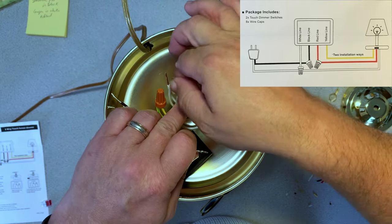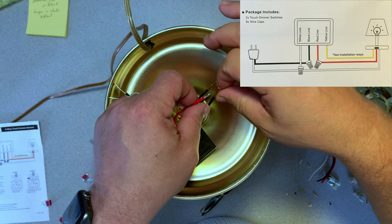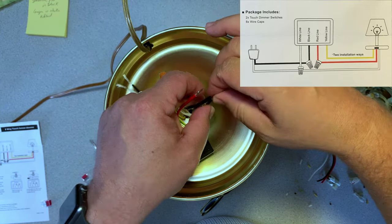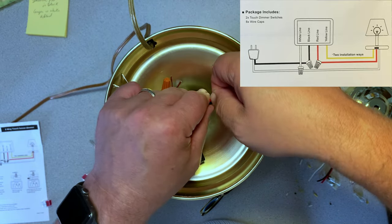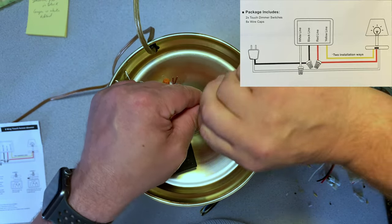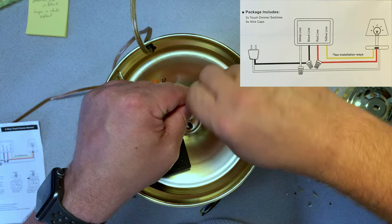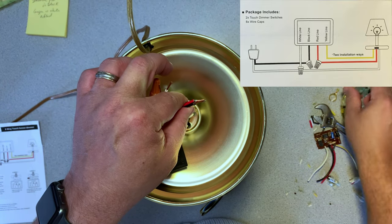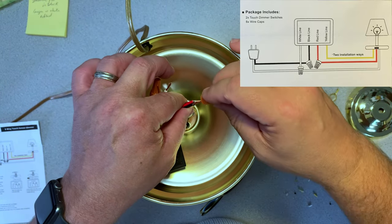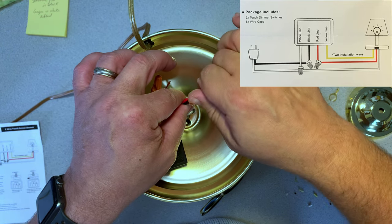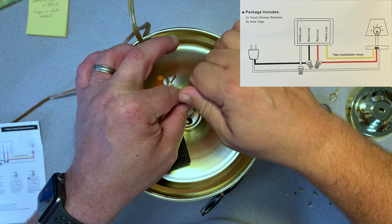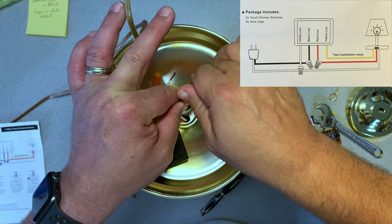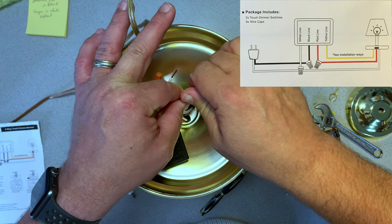Now I'm taking the red wire from the module and connecting it to the black of the lamp. Remember, I mentioned earlier that the black wire from the lamp is labeled red on the diagram. We know that it's the correct wires because it only has black, white, and yellow.